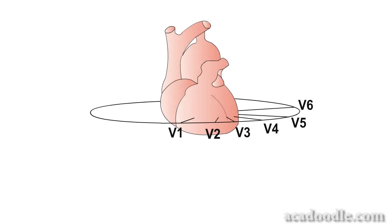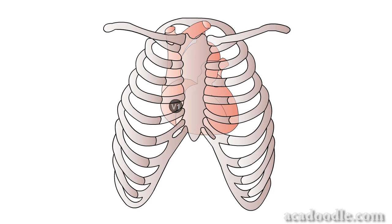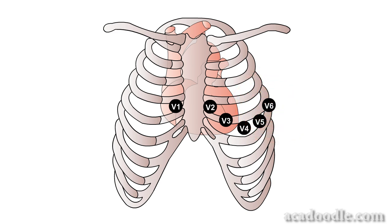We'll come back to the nomenclature and perspective of all 12 leads later, but for now let's see how this works in two of the so-called chest leads, V1 and V6. Lead V1 is placed on the anterior surface of the patient's chest in the 4th right intercostal space, to the right of the sternum and therefore to the right of the bulk of the ventricles. In contrast, lead V6 is placed on the patient's chest in the 5th intercostal space mid-axillary line and faces the heart from the left of the ventricles.